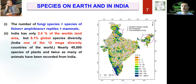India occupies only 2.4% of the world's land, but 8.1% of the global diversity is found in India. Bharat is a biodiversity-rich country and is one of the 12 megabiodiversity countries in the world. The data is a bit updated, but we are following what NCERT says. Nearly 45,000 species of plants and around 90,000 species of animals have been recorded from India.